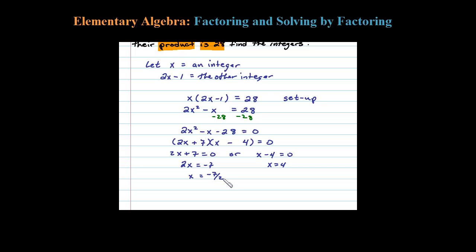Now remember, in the original problem, x was supposed to be an integer. So certainly 7 halves is not an integer, that's a sort of a fraction there. So let's go ahead and throw that one away and let's use 4 as the solution for the first integer.